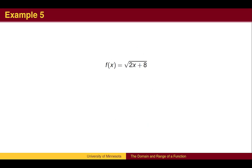Here is another example. We cannot take the square root of a negative number, so the quantity that we are taking the square root of, 2x + 8, must be greater than or equal to 0. We then solve this inequality for x.